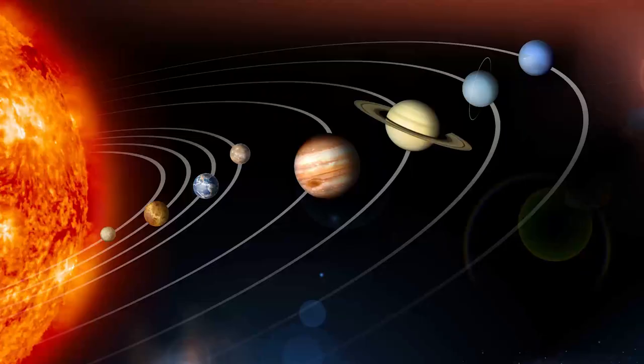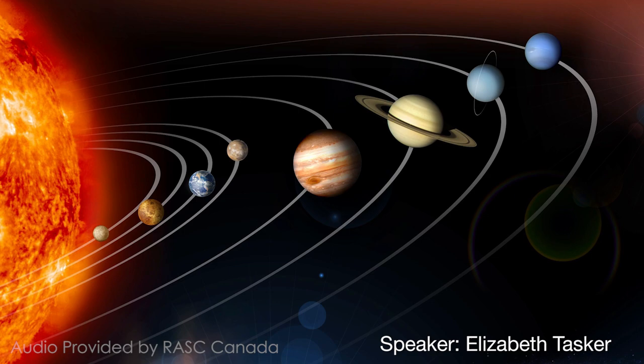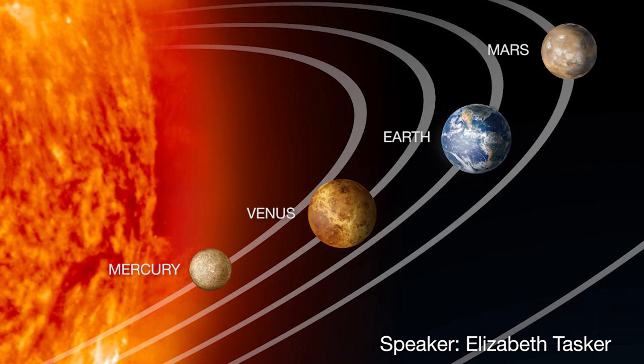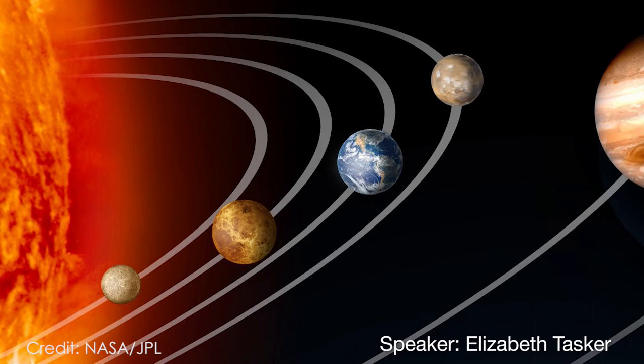This is our own solar system and we are surrounded by eight planets. We have four rocky planets: Mercury, Venus, Earth, and Mars. These are planets with a solid surface and also a thin atmosphere. And then further out,